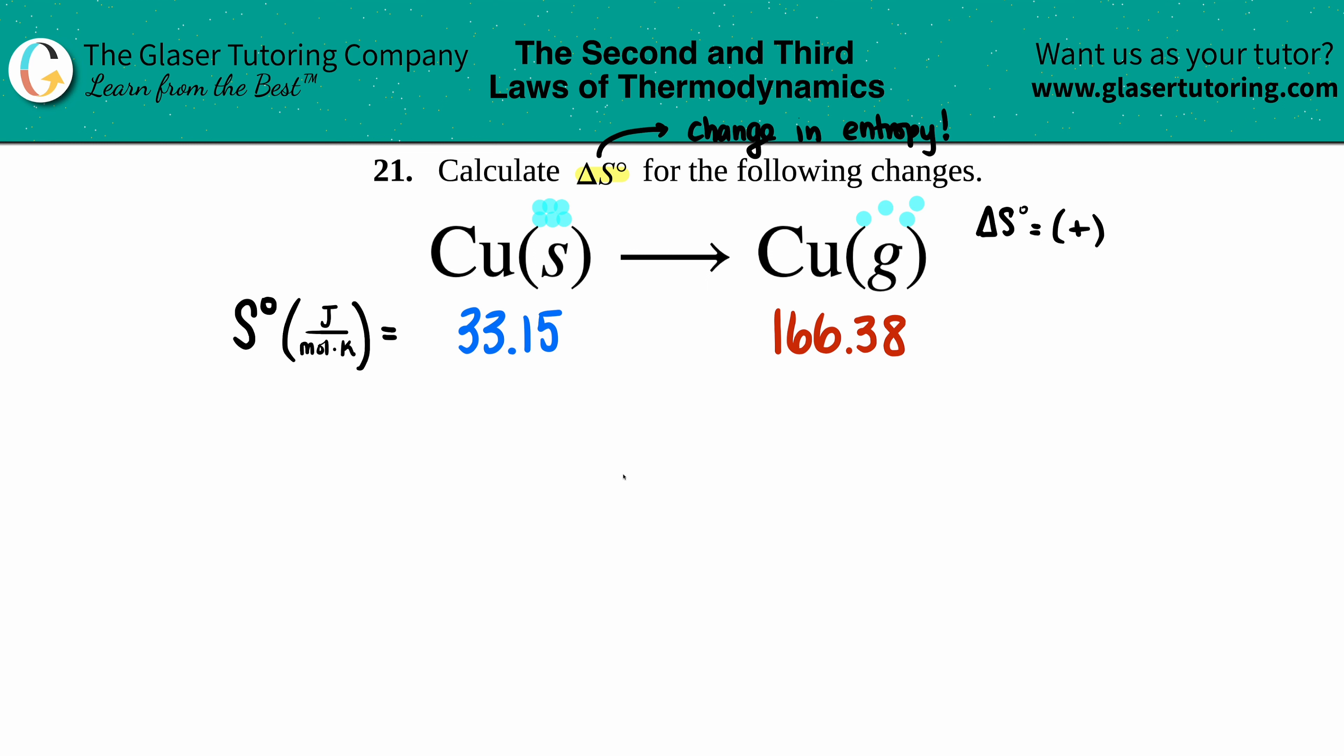Now how do we use those values to get an actual answer? Here comes the formula: delta S for the whole reaction just equals the sum - that's this little squiggly, this is the sum - and that just means you add them all up. So it's the sum of all the products minus the sum of all the reactants, so it's just products minus reactants for the delta S values.